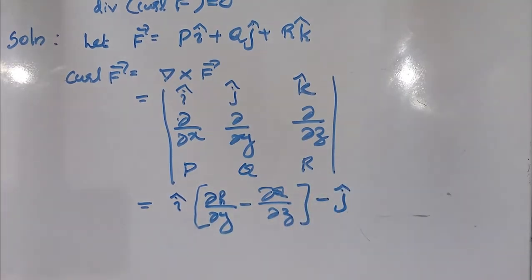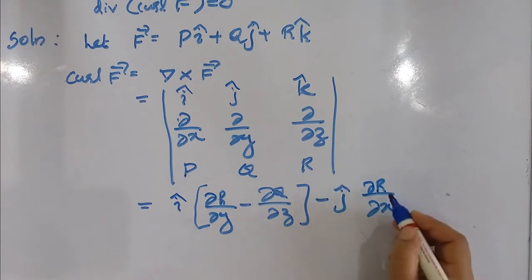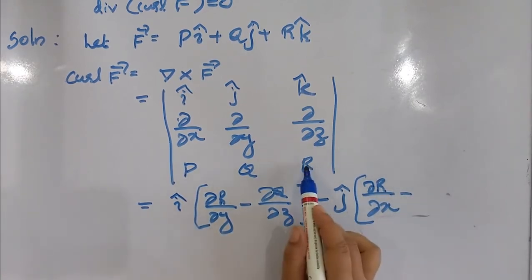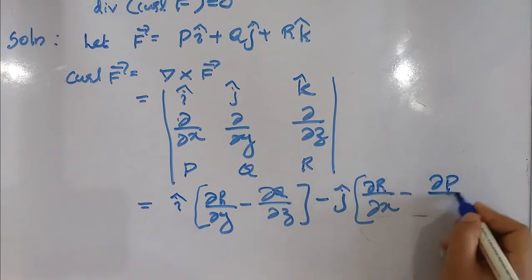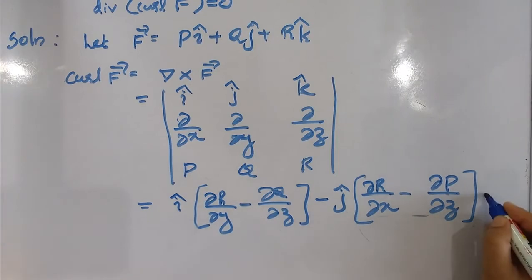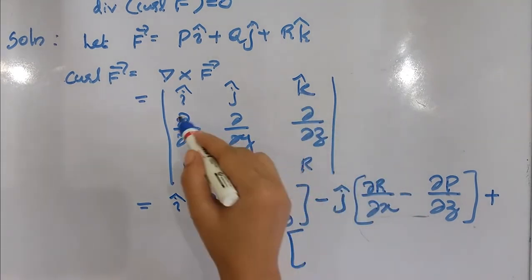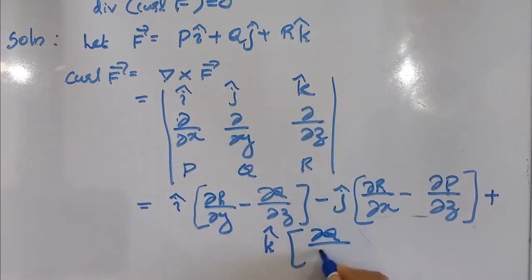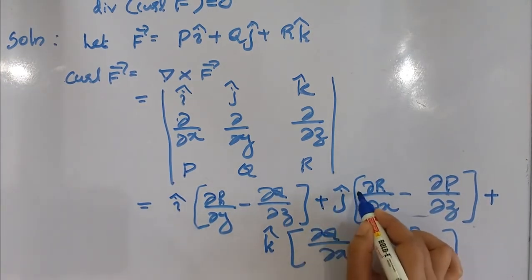The curl expansion gives: i times (∂R/∂y − ∂Q/∂z), minus j times (∂R/∂x − ∂P/∂z), plus k times (∂Q/∂x − ∂P/∂y).